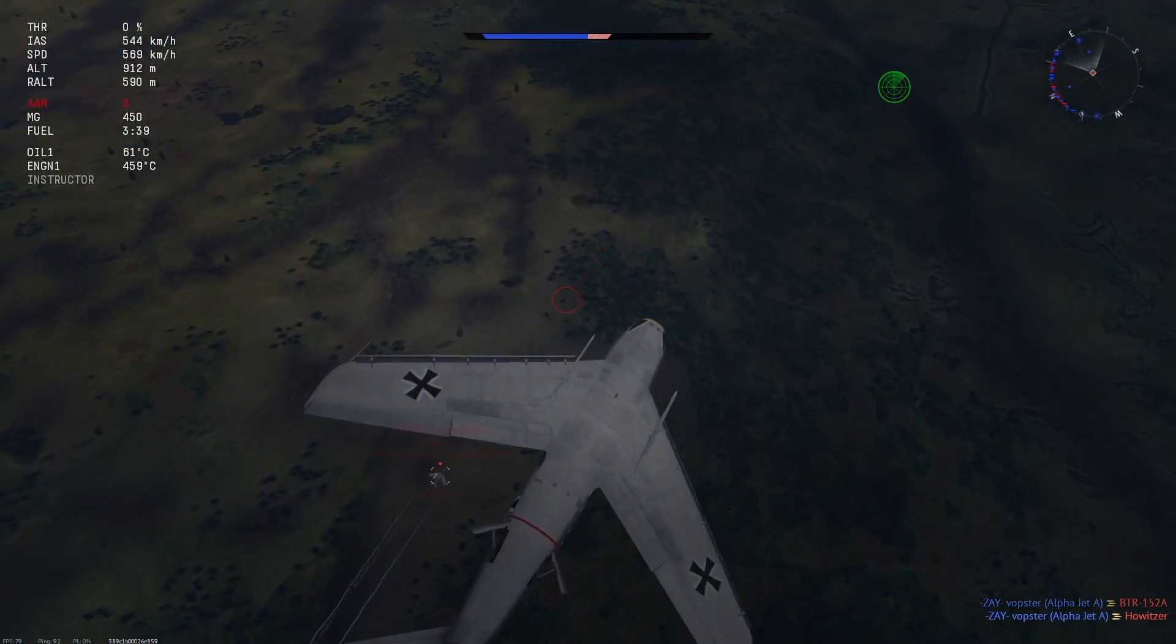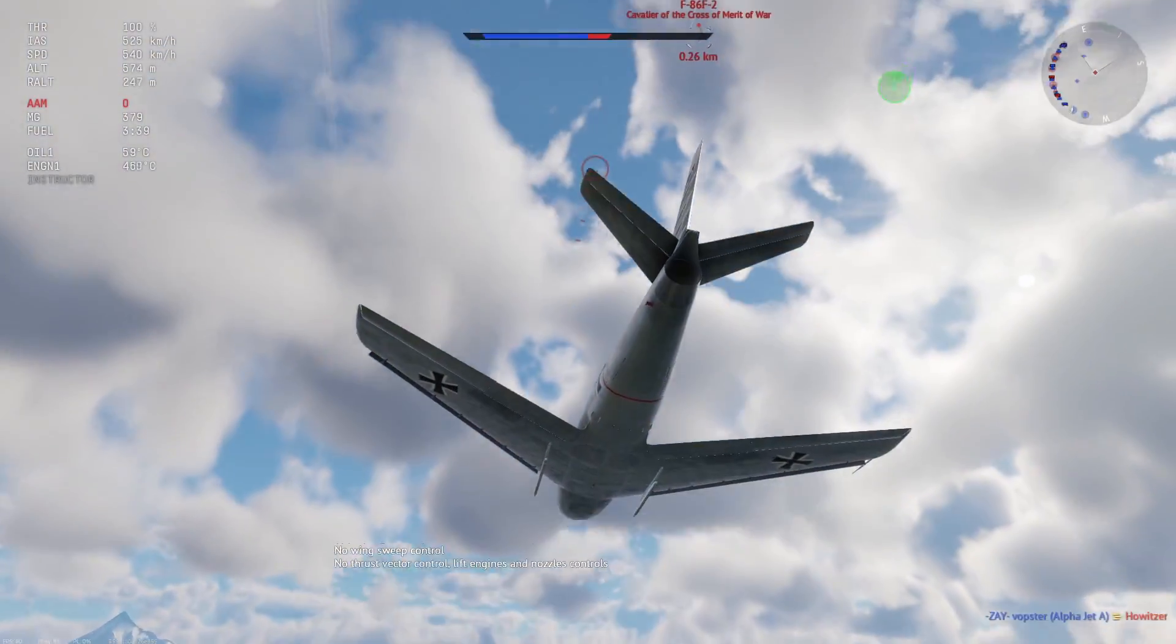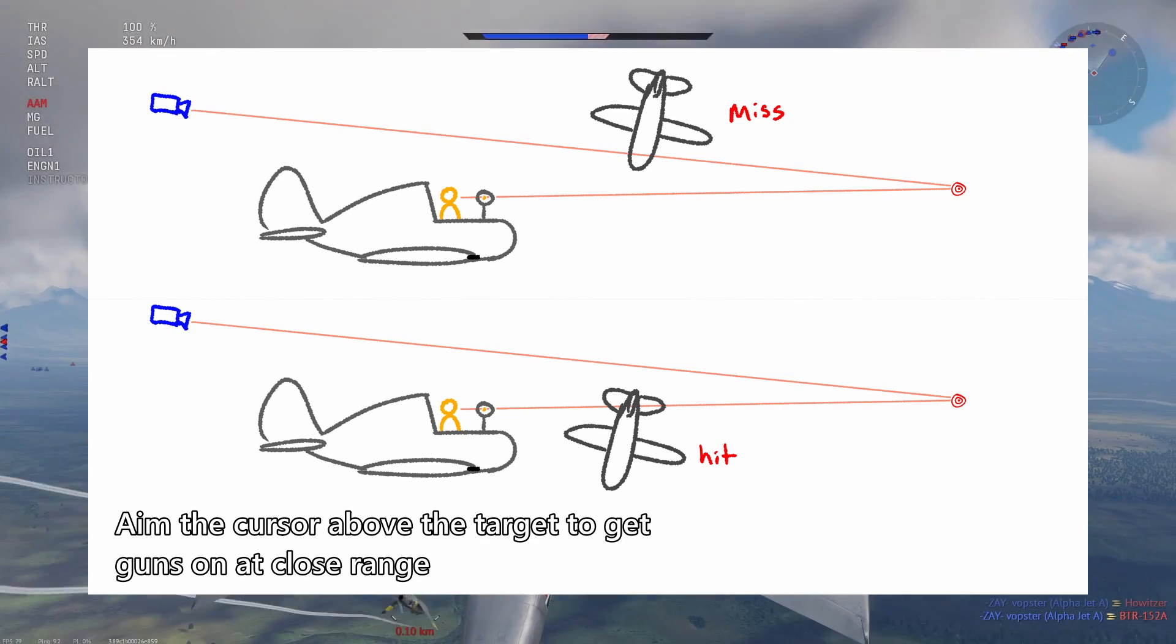This is why sometimes while doing a close-in deflection shot you end up missing because when you put your crosshair over the enemy at close ranges, but have a distant crosshair, the parallax caused by third-person means that the guns don't actually align with where the enemy is.